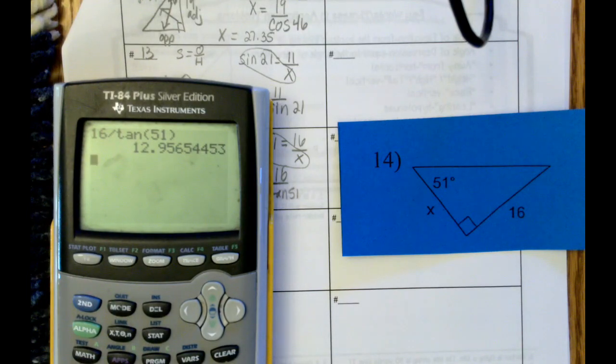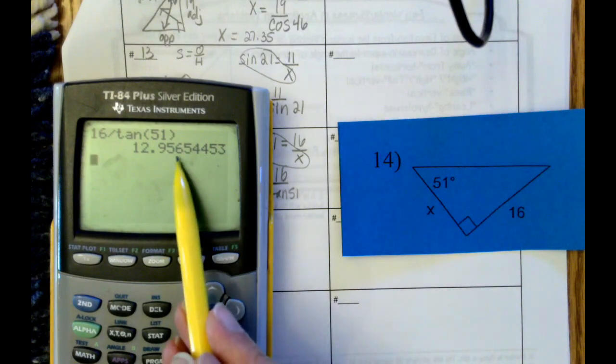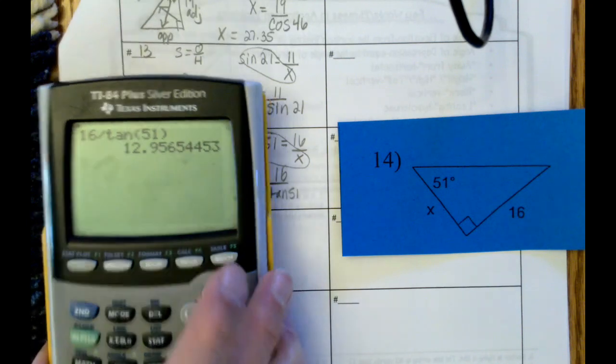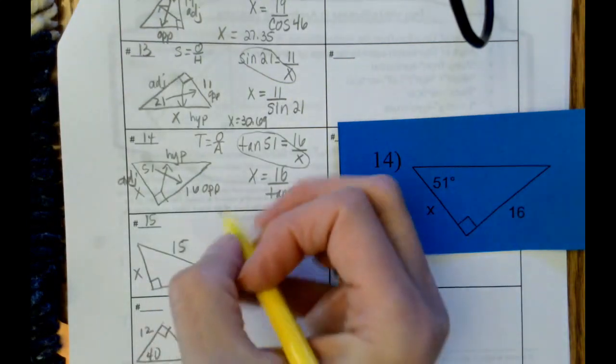And we get 12.956. Since this 6 is 5 or higher, we're going to round that 5 to a 6. So this is going to be 12.96 when we round to the nearest hundredth.